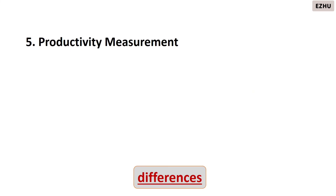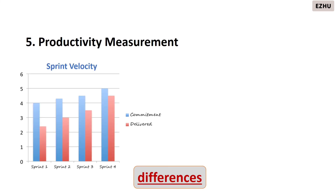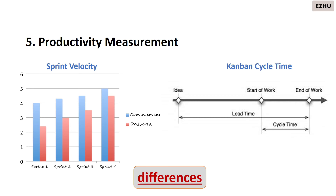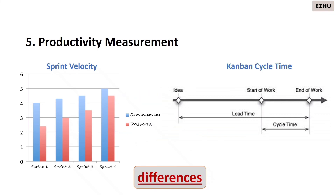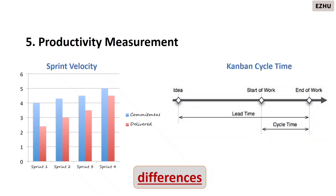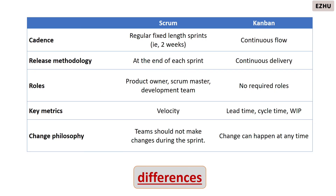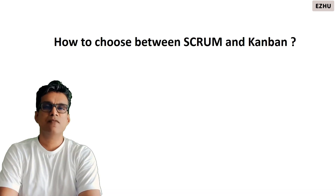Sprint velocity is used for productivity measurement in scrum — it is the number of features committed against the number of features delivered at the end of the sprint. In kanban, cycle time is used as the productivity measure — the time taken to complete a full piece of product. This table shows a quick summary of the differences between scrum and kanban.